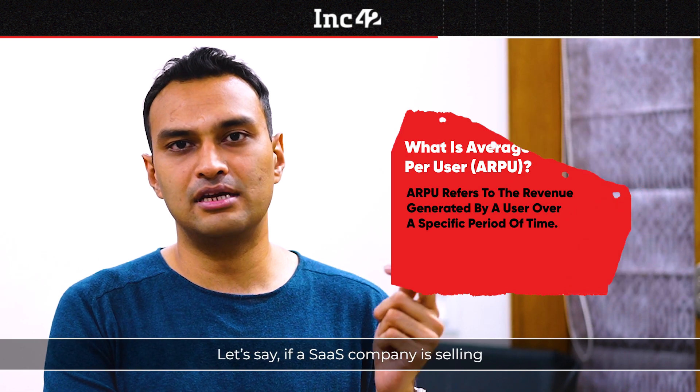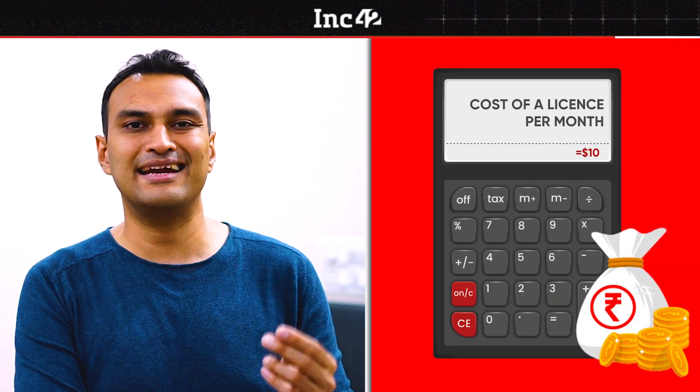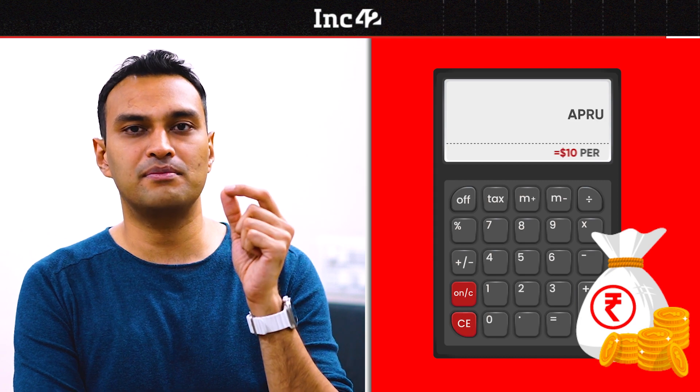Let's say if a SaaS company is selling licenses to an SMB or an enterprise customer and one license is priced at $10 per month, then that $10 per month per user is called ARPU.